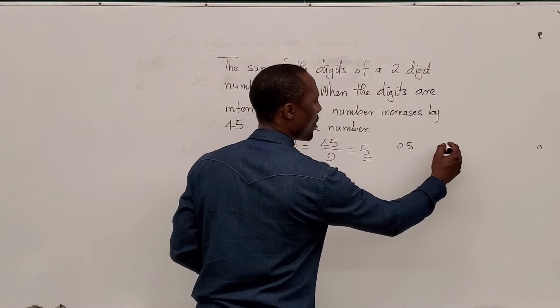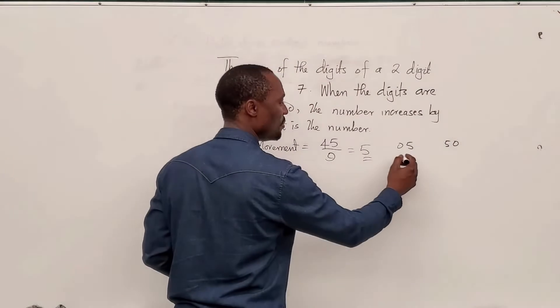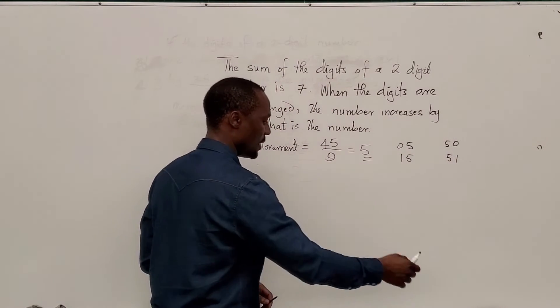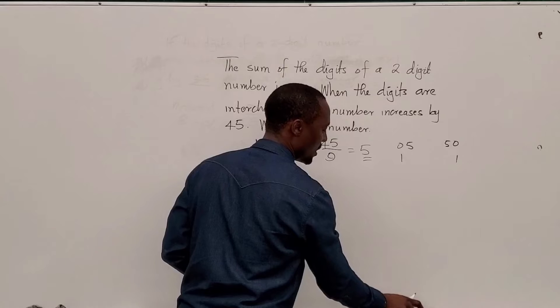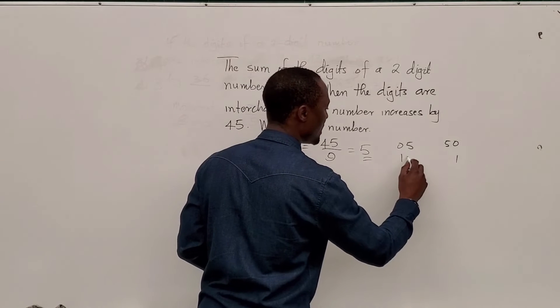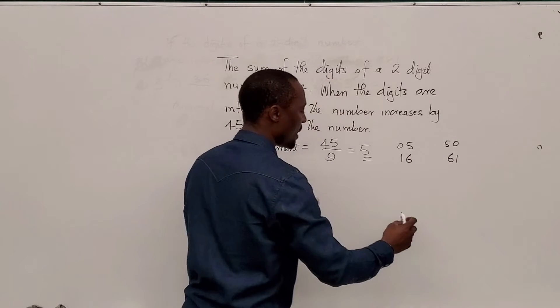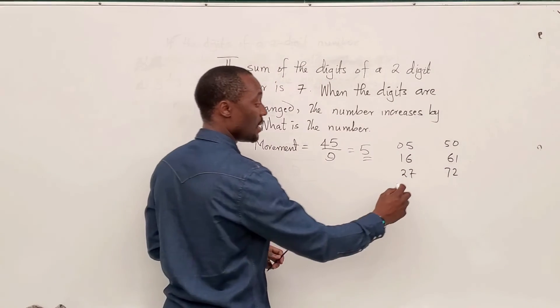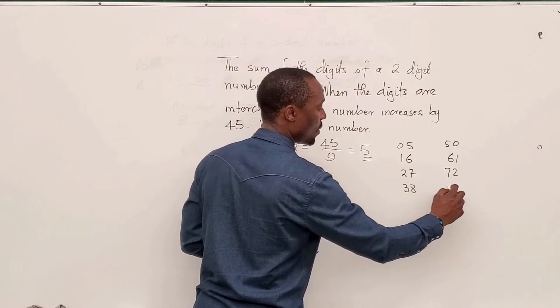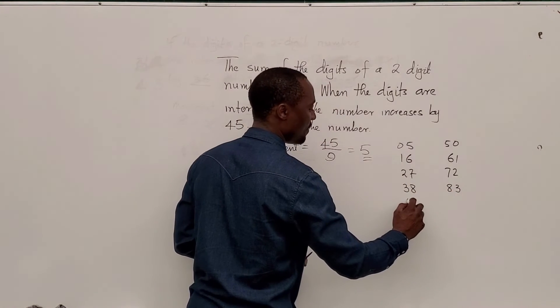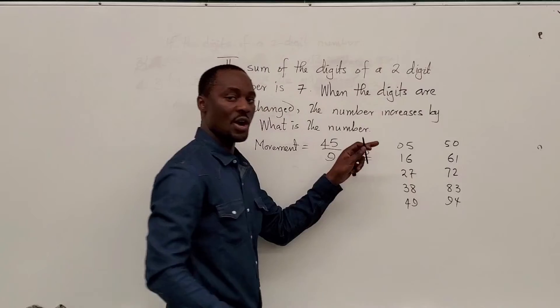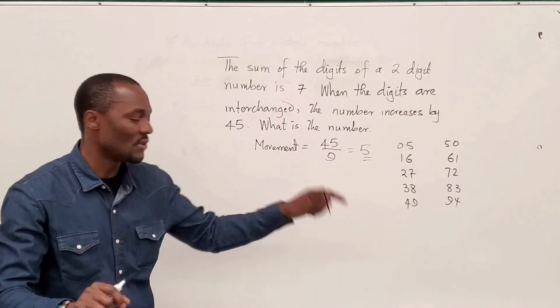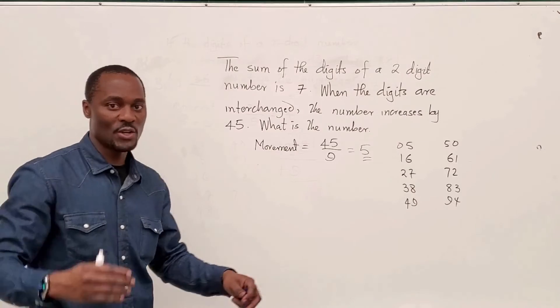So, I can make a list. That's 0, 5, or 5, 0, or it could be 16 and 61. It could also be 27 or 72. It could also be 38 or 83. And it could be 49 or 94. Those are the options you have. Of numbers that you have to move five steps to get to the other one. Whether you're going up or down.